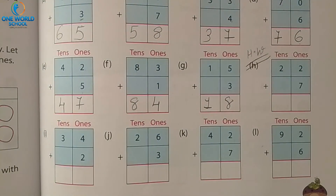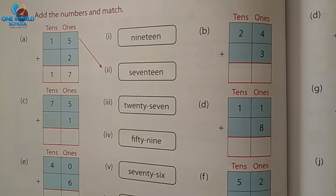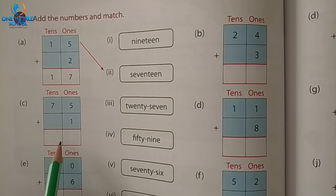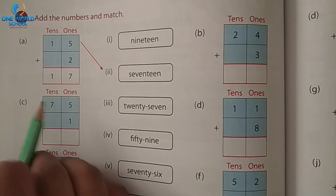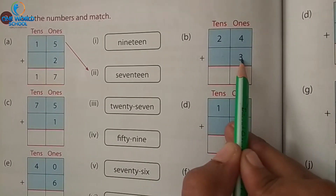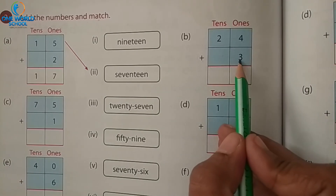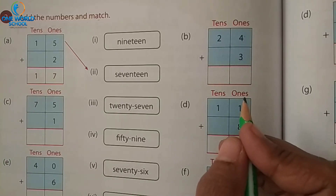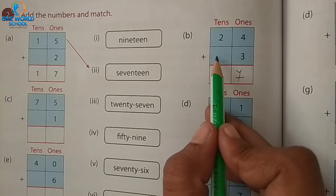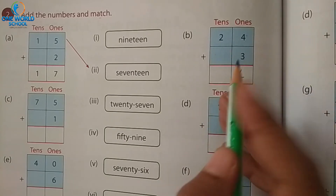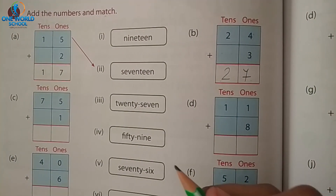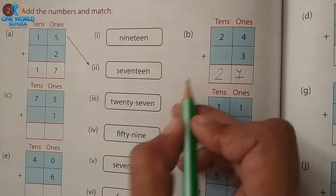Now turn the page, take the next page. What is our next exercise? Add the numbers and match. We have to add this number and then match it with the number names. Number A is done for you, so we will start from number B: 24 plus 3. From the ones place, 4 plus 3 equals 7. And 2 plus 0 equals 2. So the answer is 27. Match it where 27 is written — it is number 3.